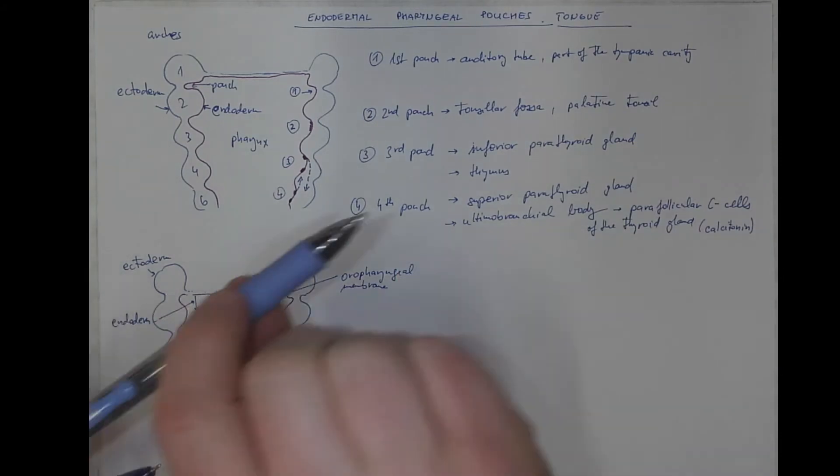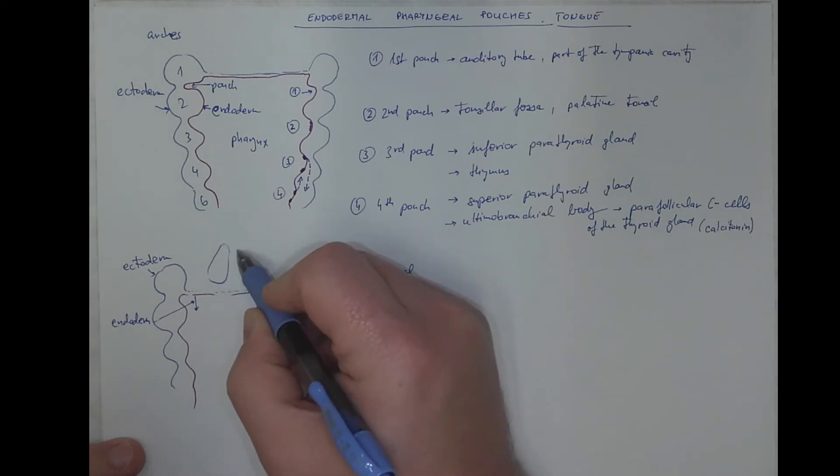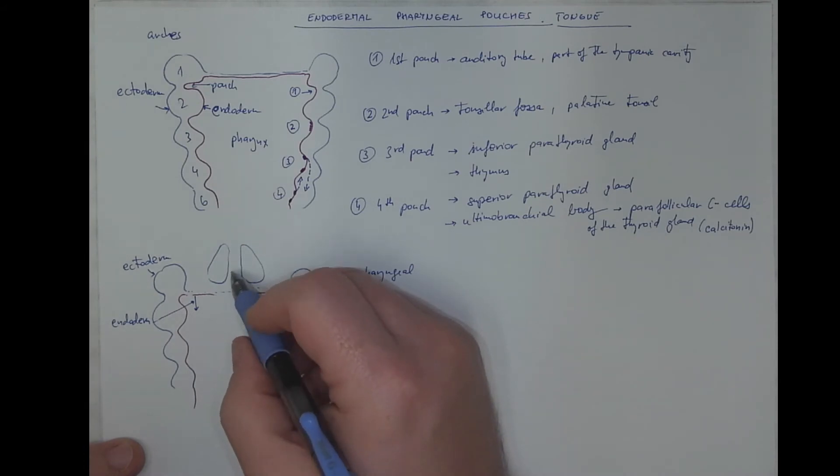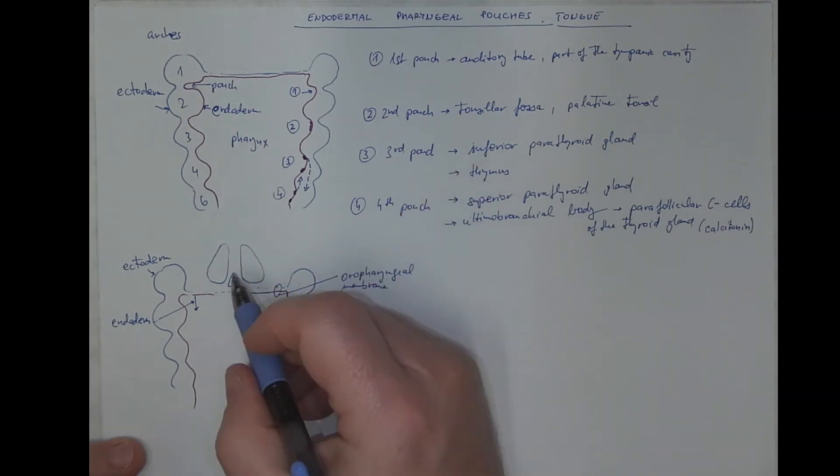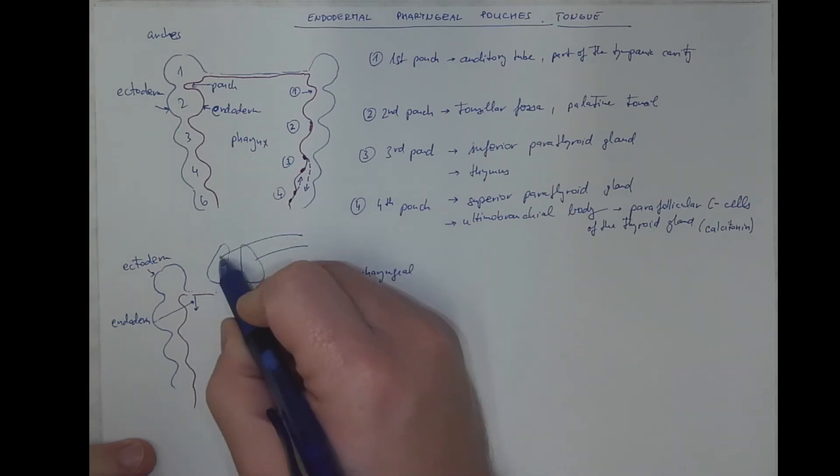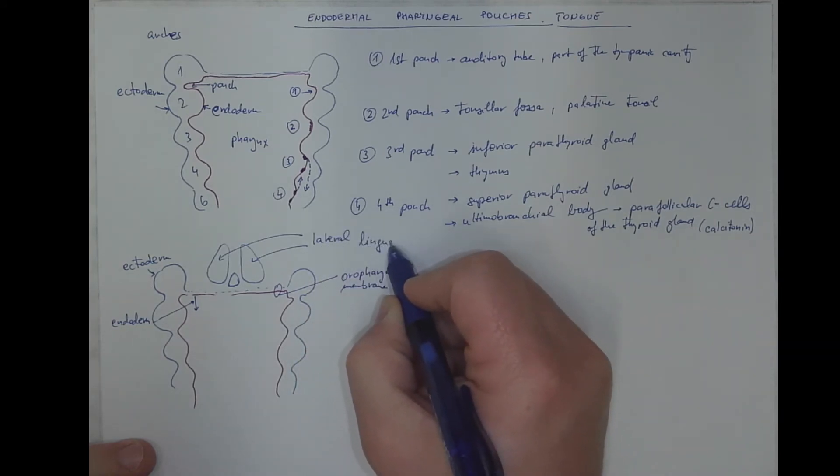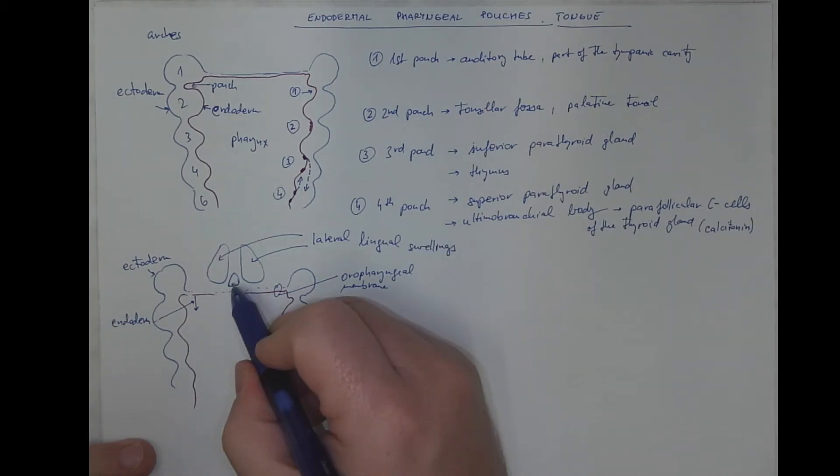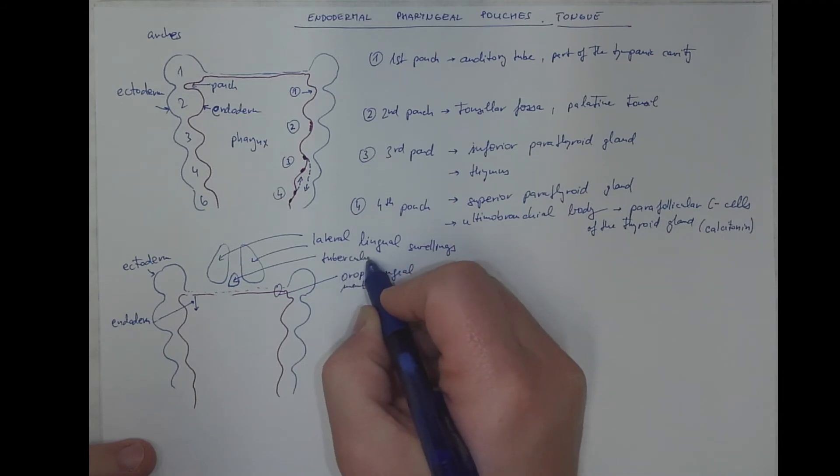Now, the mesenchyma of the stomodium cavity is bulging here, forming paired prominences called lateral lingual swellings, and one small unpaired prominence. But the epithelium that covers these prominences of proliferating mesoderm is covered by ectoderm. Therefore drawn in blue. So, we got two lateral lingual swellings in the ectodermal region in front of the oropharyngeal membrane.